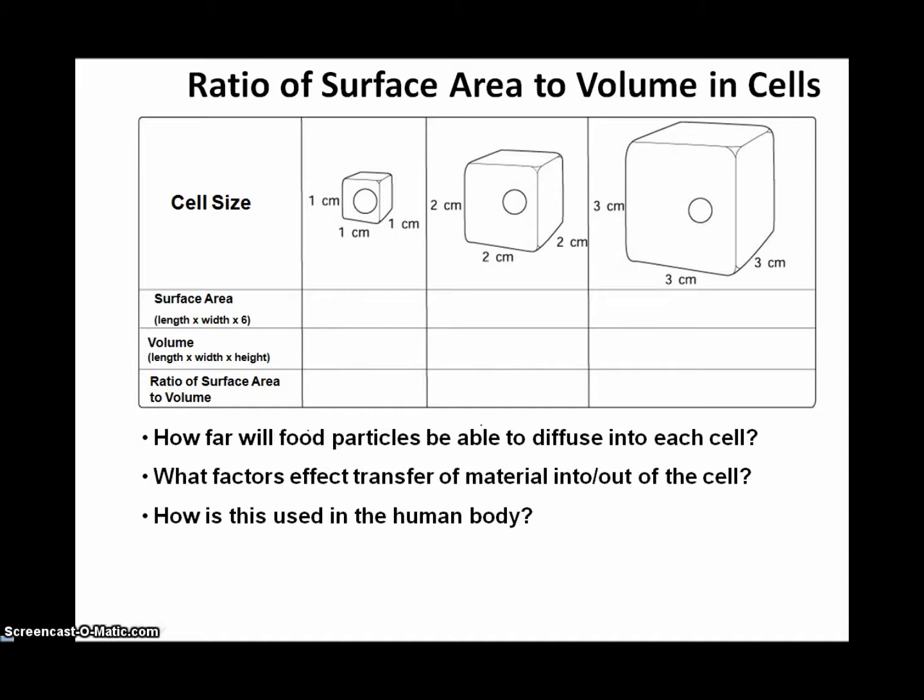In the diagram here we have three cells of cubic shape. The first is one cubic centimeter, the second is two cubic centimeters, and the third is of course three centimeters cubed. We're going to do a short thought experiment here by asking the questions, what happens to our surface area and our volume as we increase cell size? So our surface area is length times width times the number of sides, in this case six. So if we do a calculation, we get six cubic centimeters squared for our surface area.